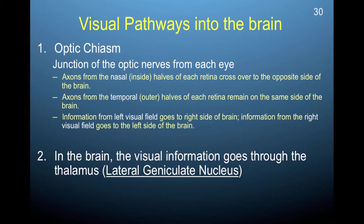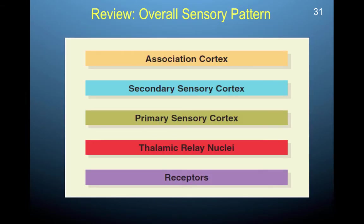Information from the left visual field goes to the right side of the brain, and information from the right visual field goes to the left side. In the brain, visual information goes through the thalamus — the lateral geniculate nucleus (LGN) is located there. This corresponds to the pathway from receptors to the lateral geniculate nucleus, which is the thalamic relay nuclei for this particular part of the visual pathway.